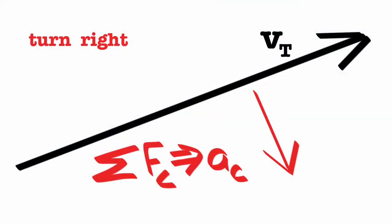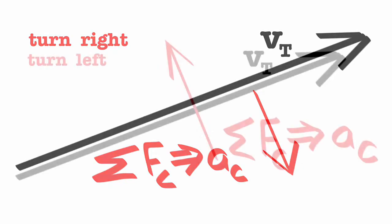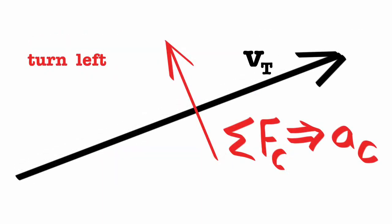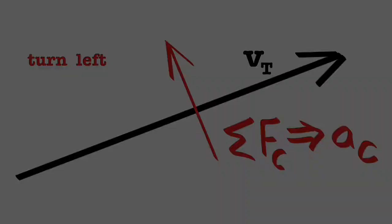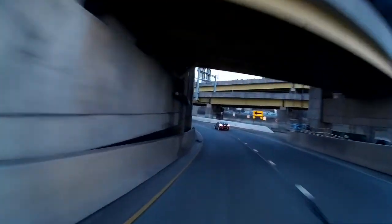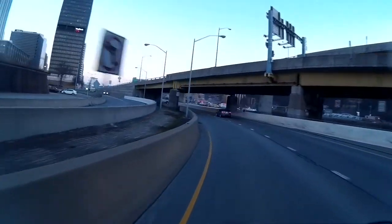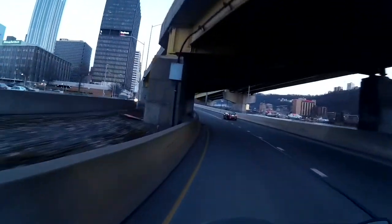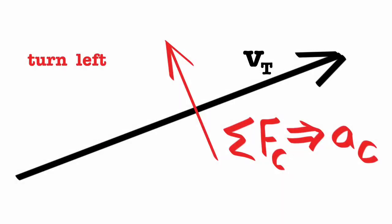If you're turning right, there isn't any tangential acceleration — it's all centripetal acceleration perpendicular to your velocity, to the right. Turning left is the opposite. Tangential velocity is straight forward, but the centripetal force causing the centripetal acceleration is perpendicular to you — to the left. Tangential velocity is forward and the centripetal net force causing centripetal acceleration points left.